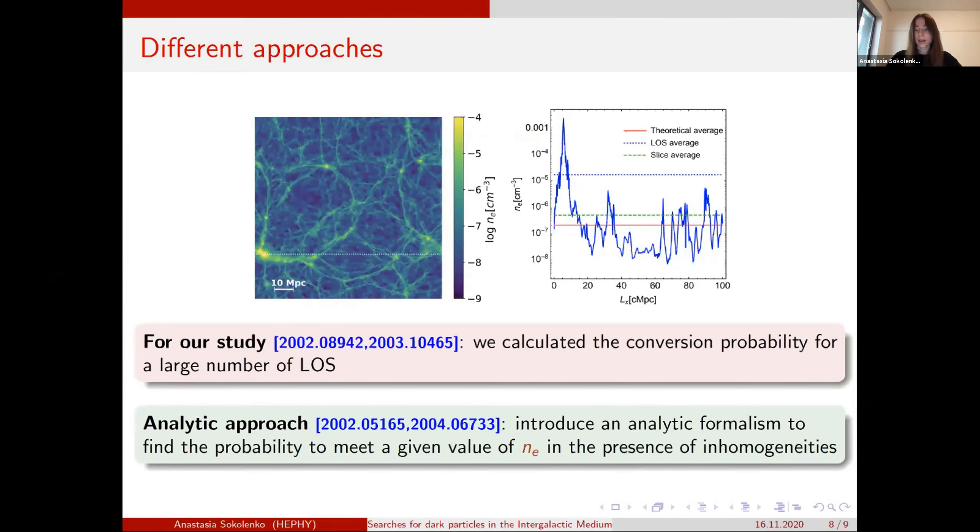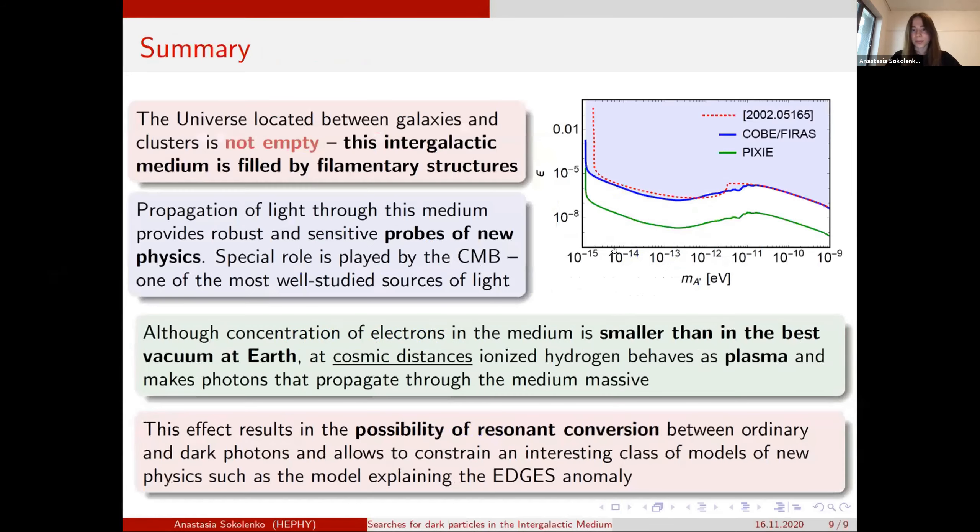And as we see at this plot, we have comparable results. So at this plot, we constrain the dark photon from COBE using the EAGLE simulation. And this group uses the analytical approach. And you see that the results go quite closely. And we have a projection to the future experiment.